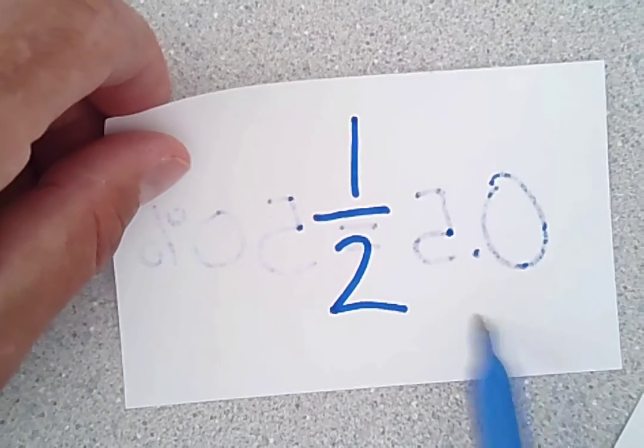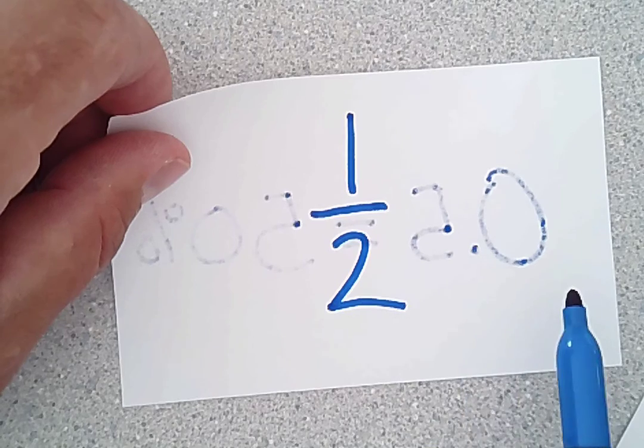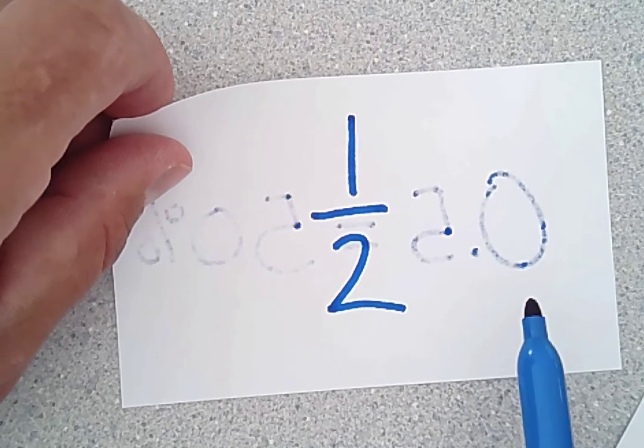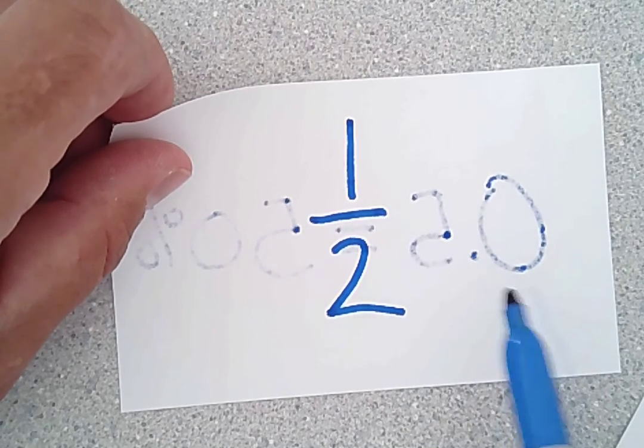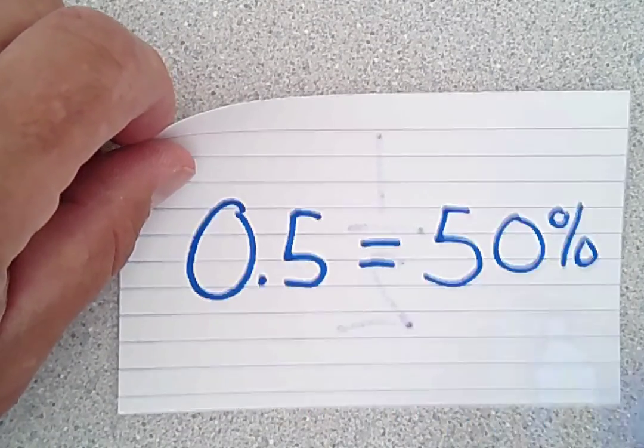So we have one half on one side, and it looks like you should not be using Sharpie like I am, because it bleeds right through. So go ahead and use a pen or a pencil to do this. So you have one half is equal to 0.5, which is equal to 50 percent.